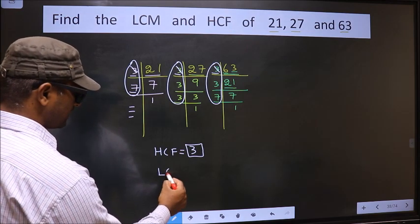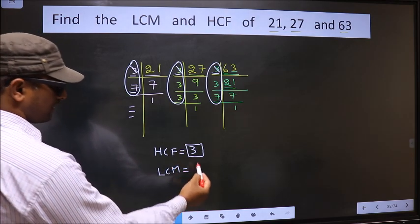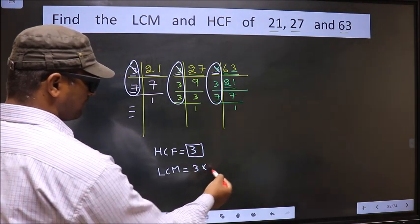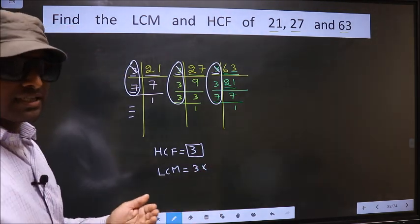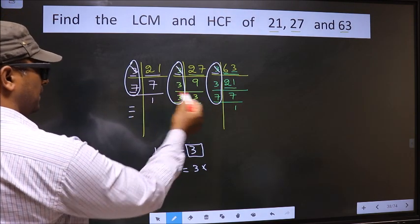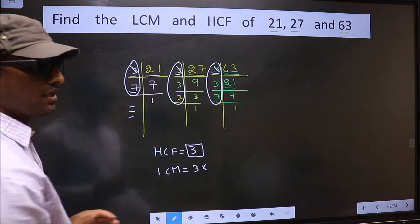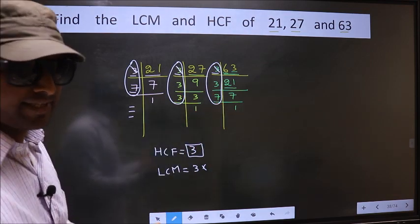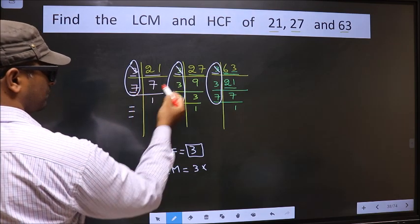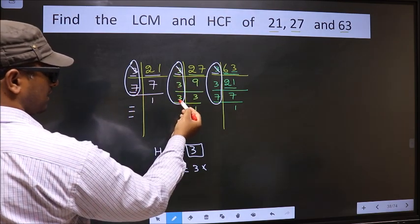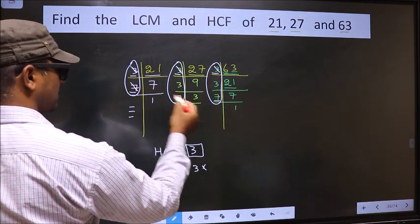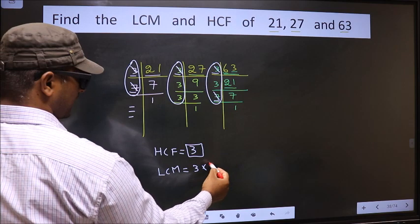Now to get LCM, whatever HCF we got, to that we should multiply by the numbers which appeared either once or twice in these 3 places. What I mean is, see, over here 7 is not cut. Over here do we have 7? No. Next place, do we have 7? Yes. So you cut 7 in these 2 places and write here.